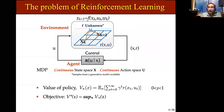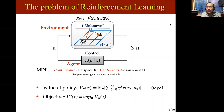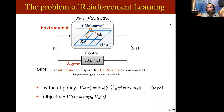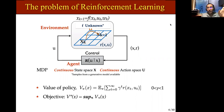Peter Stone asks a clarifying question about assumptions: whether this involves a defined policy space where parameters are optimized, or raw states and actions. Rahul responds that there are essentially no assumptions — this is the problem statement slide — and hopefully it will become clear as we go along.